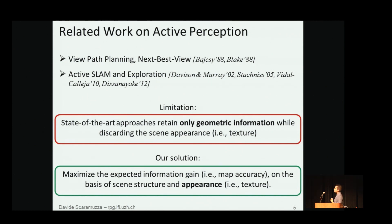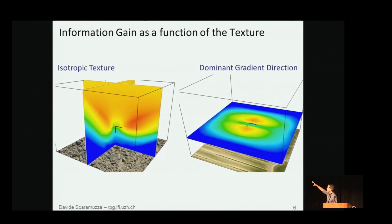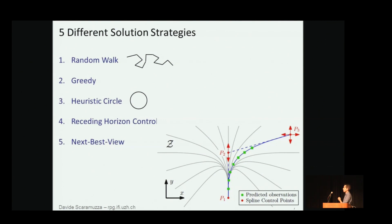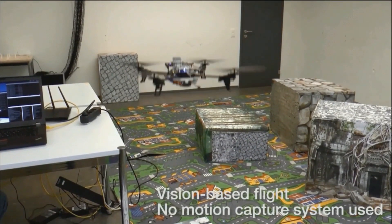Instead, we aim to maximize the expected information gain based on both scene structure and appearance, formalizing this as a function of the photometric disparity uncertainty, calculated from the second moment matrix of the Harris detector. The intuition is that to achieve reliable matching you need strong image gradients, and the gradient direction should be taken into account when generating motions suitable for depth estimation. We devised several control strategies and found that a receding horizon control strategy performs best. We parametrize trajectories with B-spline curves using three control points to reduce the search space, and we evaluated our approach on both simulated and real experiments.